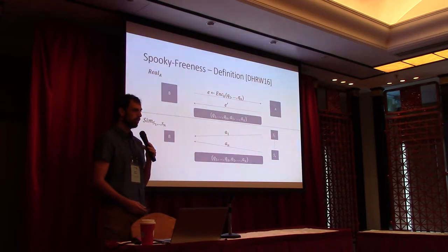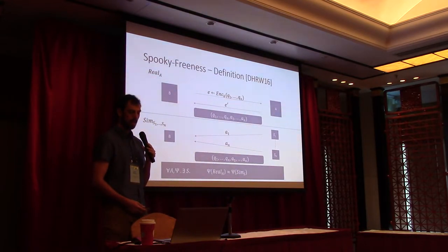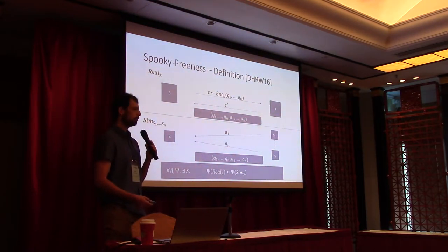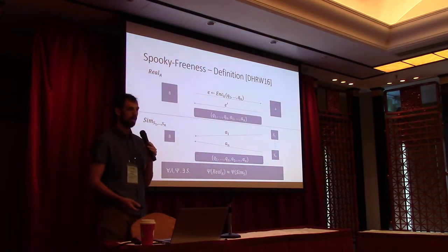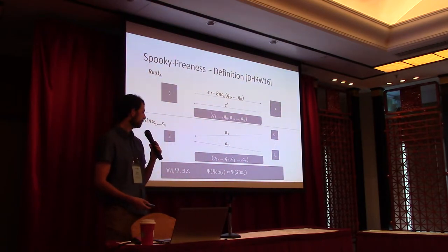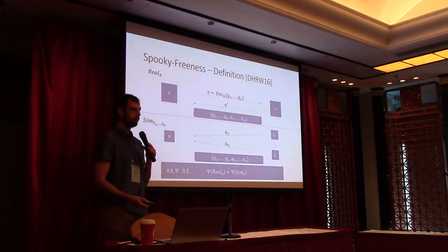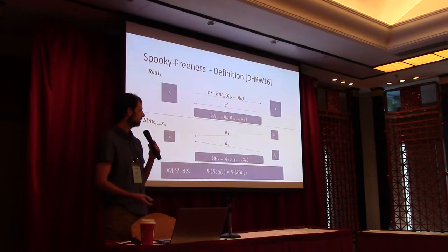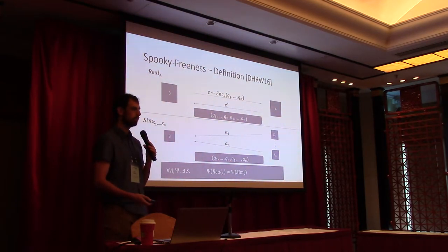The output of this experiment is again all the queries and the answers Bob got. We say that the spooky-free compiler is spooky-free if, for every adversary in the first experiment and every distinguisher psi that tries to distinguish between the two experiments, there always exists some simulator such that whatever psi can learn from the real experiment can always be simulated by simulator S. This definition captures exactly what we wanted: whatever an adversary could do can always be expressed by a local simulator S, and since simulators cannot communicate with each other, the functionality they apply is always local.